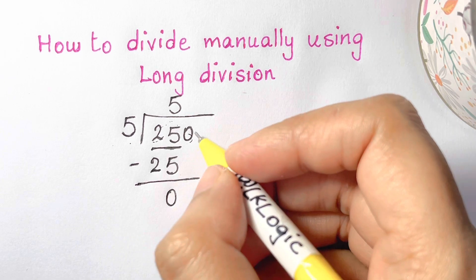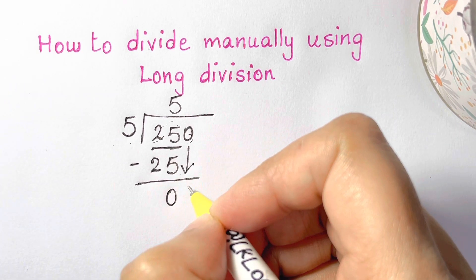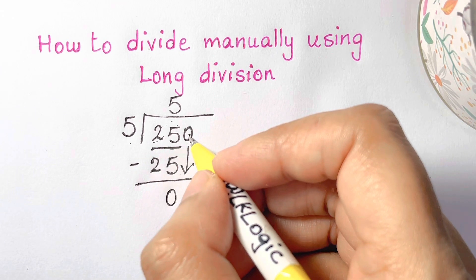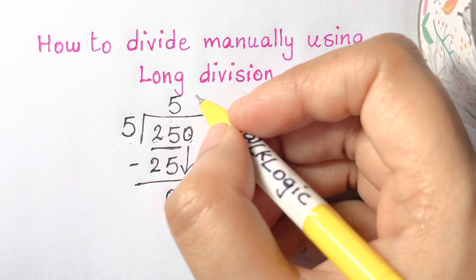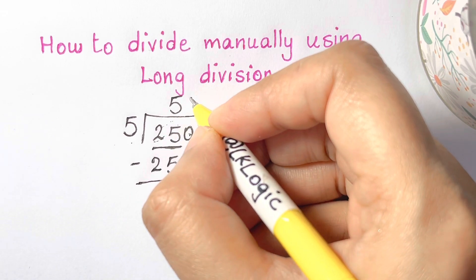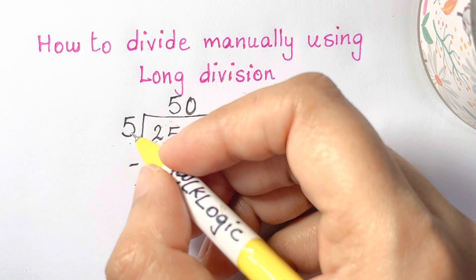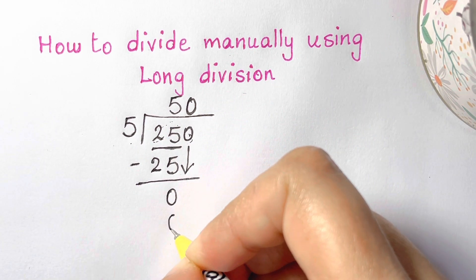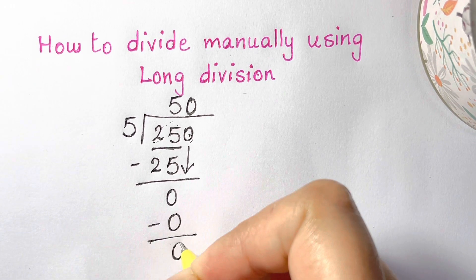Then you have to bring down the next number. The next number is 0. So 5 goes into 0, 0 times. We put the 0 right above the 0. Then you multiply: 5 times 0 is 0. So 0 minus 0 is 0.